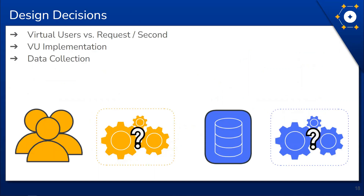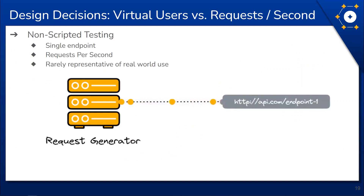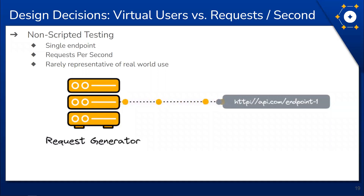Before we get too far into Constellation's architecture, there were several design decisions we needed to make prior to and during development. First, we had to decide how we were going to perform the testing itself. Given an API to test, there are two main testing approaches usually referred to as non-scripted and scripted. Non-scripted testing is relatively simple — the test hits a single target endpoint with requests in a given time frame, typically measured as requests per second.